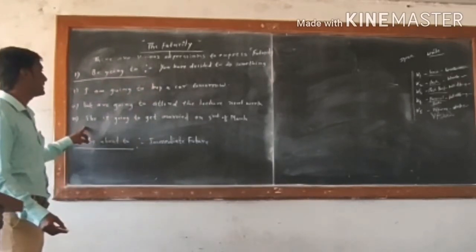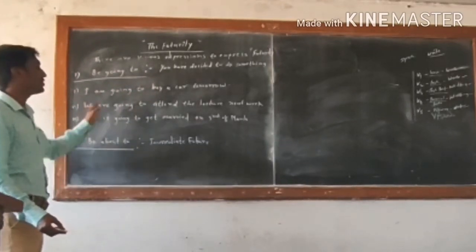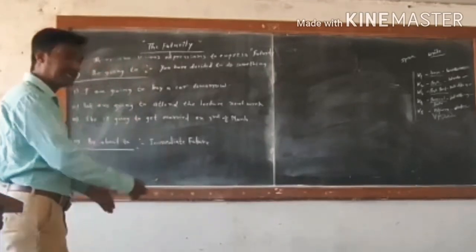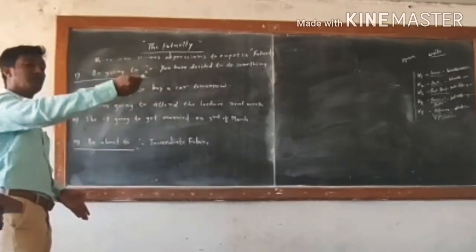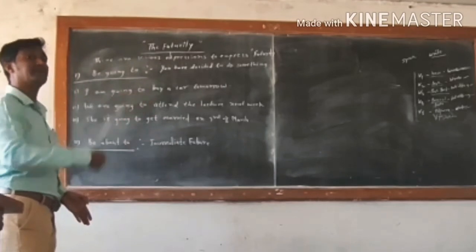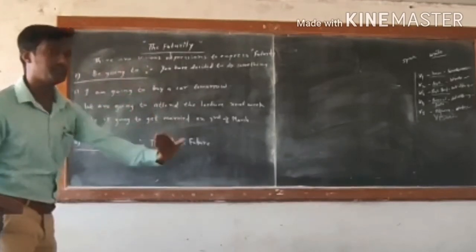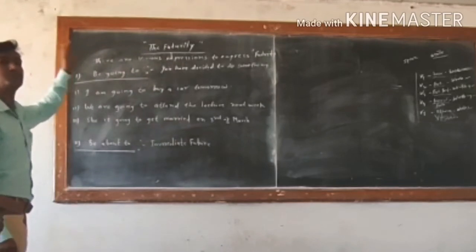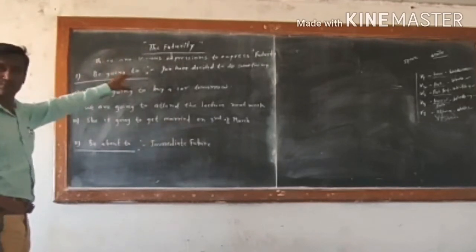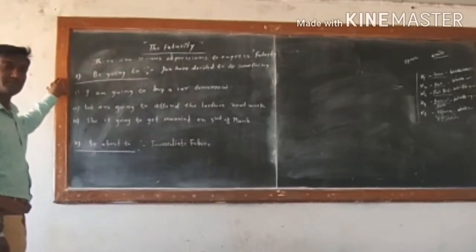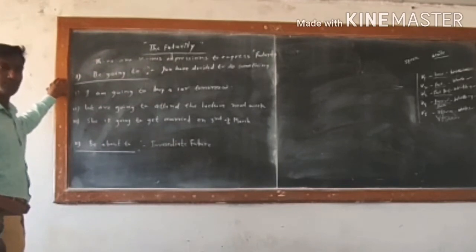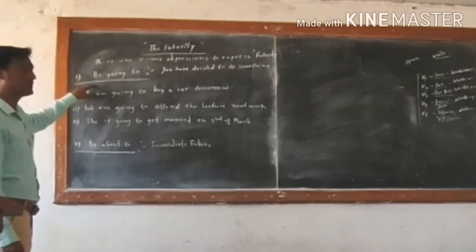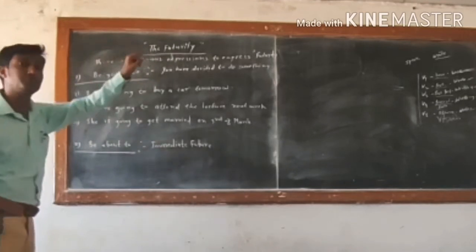'She is going to get married on 3rd of March.' Being in the present tense, you are speaking of something that will take place in the future. So 'be going to' can also be used for futurity — apart from present tense, present progressive, and simple future, 'be going to' can also be used to express future.